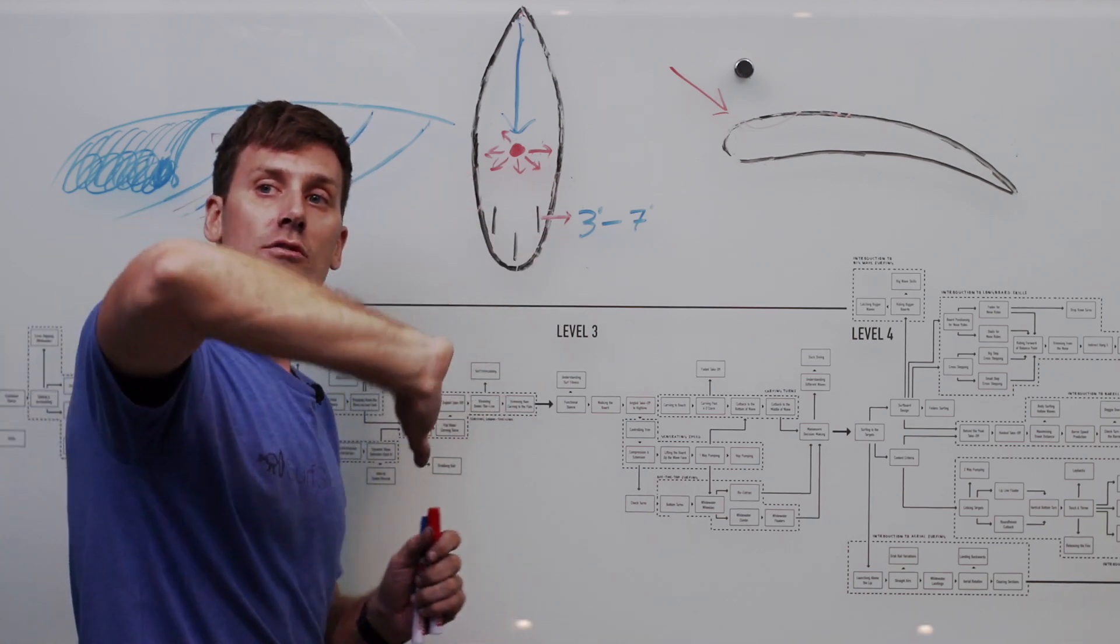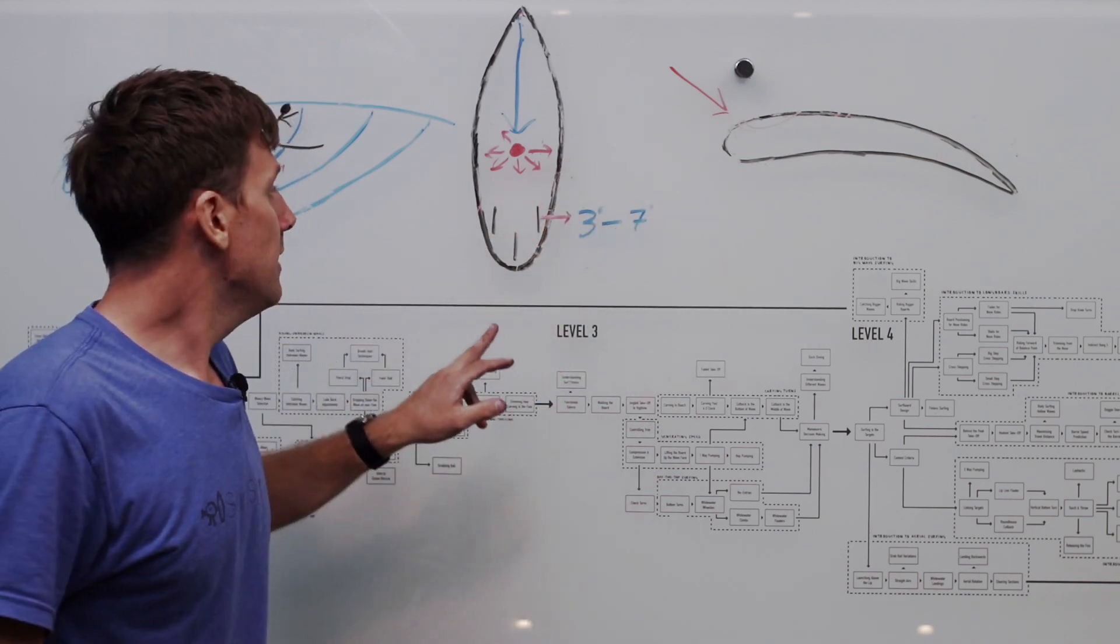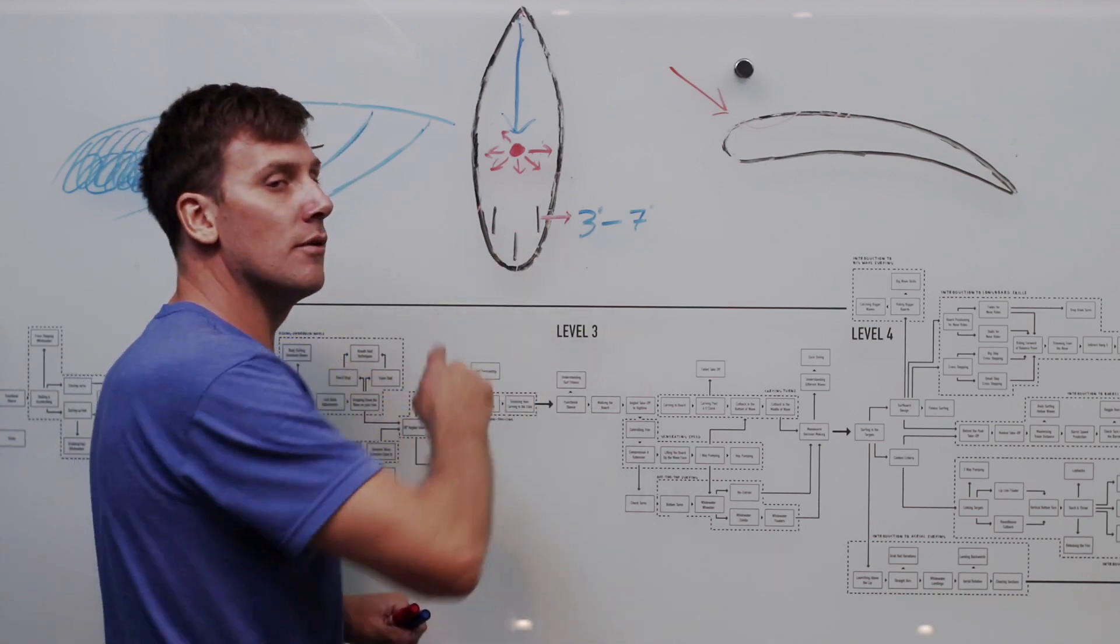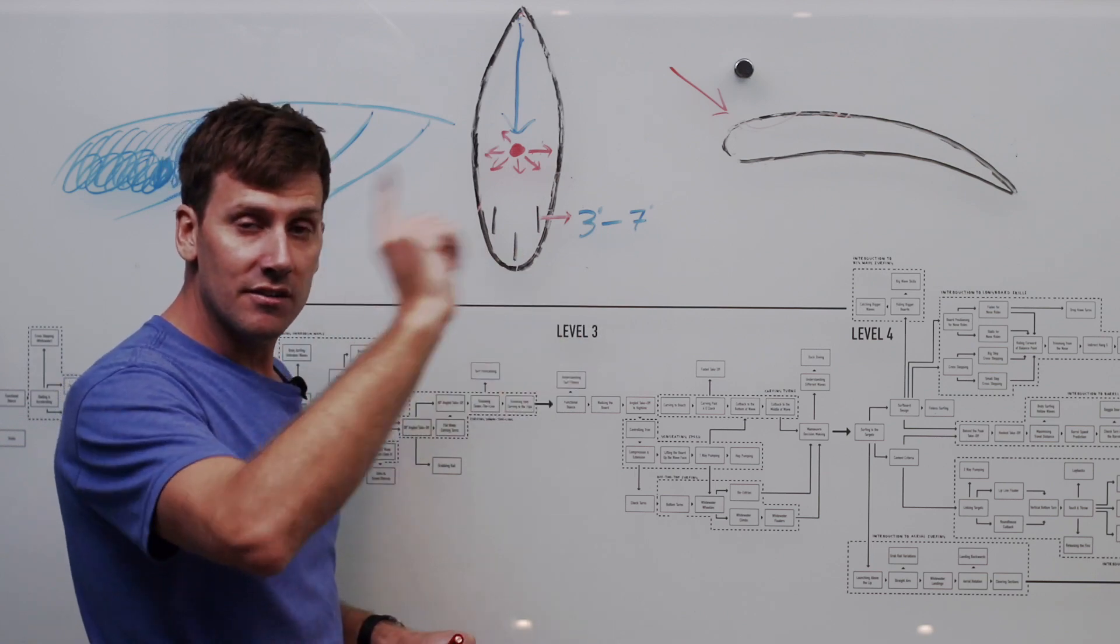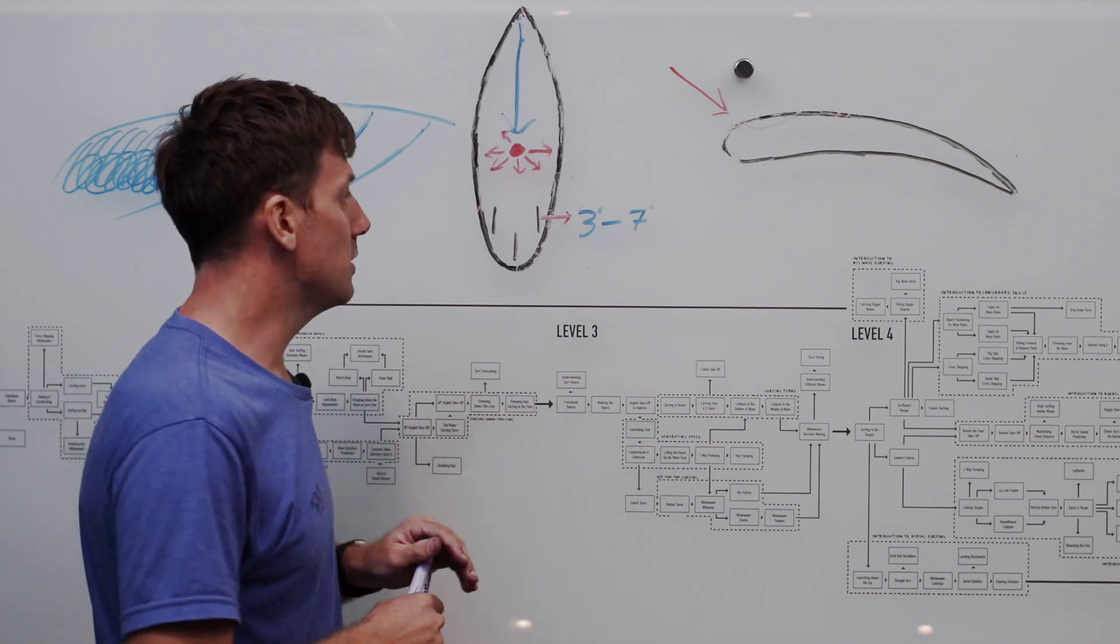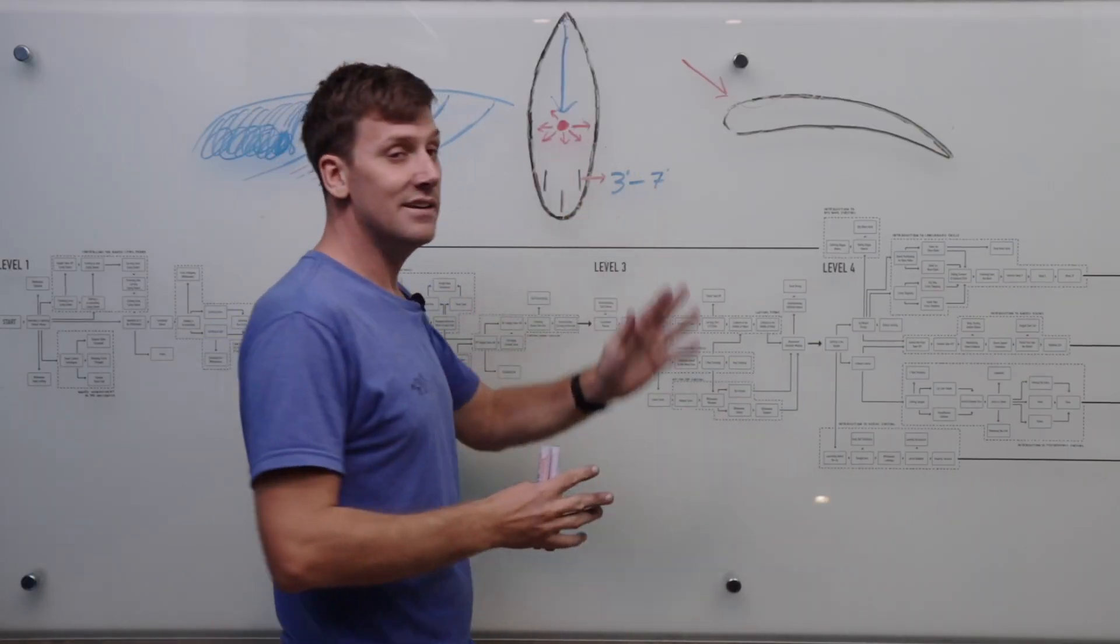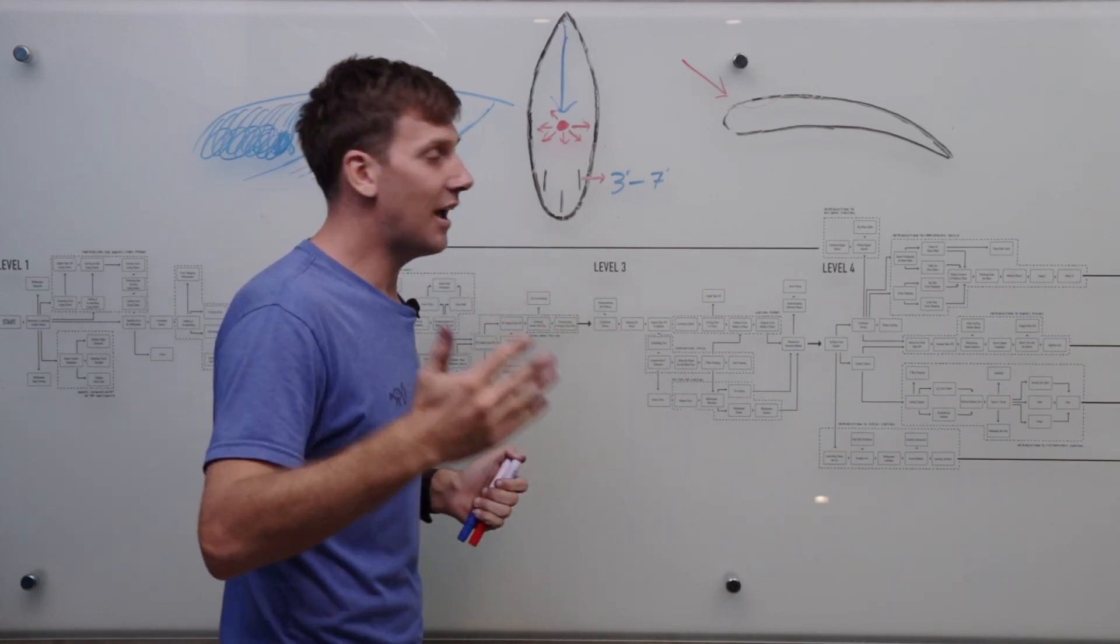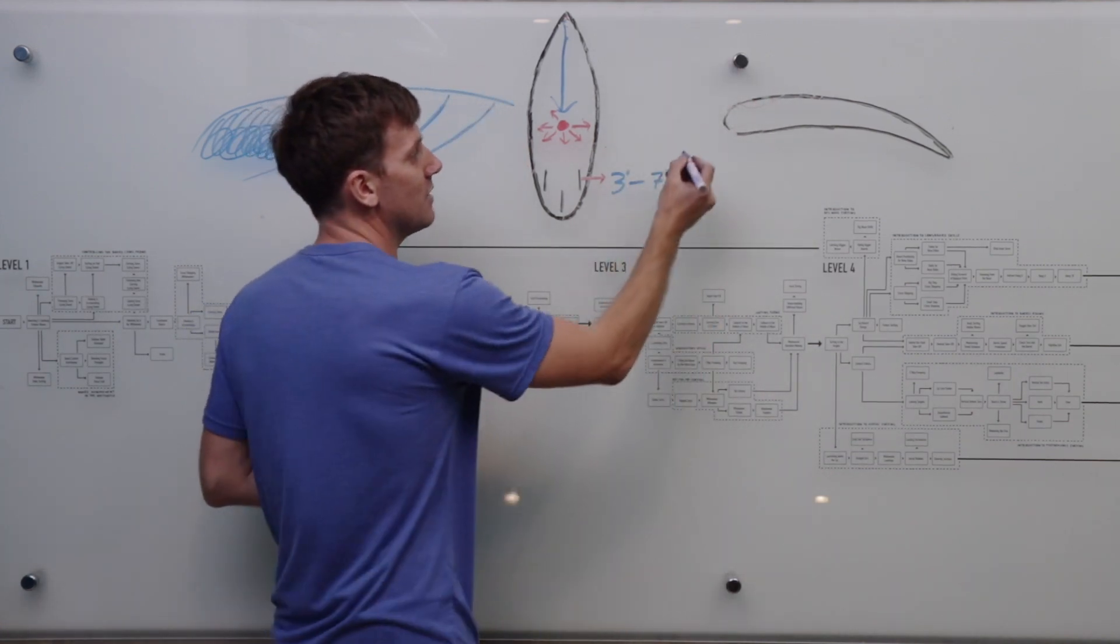Now, if that was the case all the time, then what we would expect to see is that by towing the fins in on the board, it would grip the wave less well. It would be harder to keep the board going down the line. We know that towing the fins in more makes the board more maneuverable, but we know that adding side fins that are toed in does help with traction on the wave face, does help the board grip. So that means that we must then have a positive angle of attack, but it's probably a very shallow one.